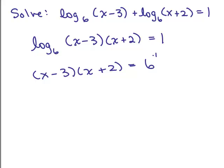So we have a log of something equals 1, so now we could use our definition. 6 to the first power equals x minus 3 times x plus 2. So now we've written it in exponential form, which will be a little bit easier. On the right-hand side, 6 to the first power is just 6, and on the left-hand side, we need to multiply those two binomials. You could do the FOIL method or any method you want.